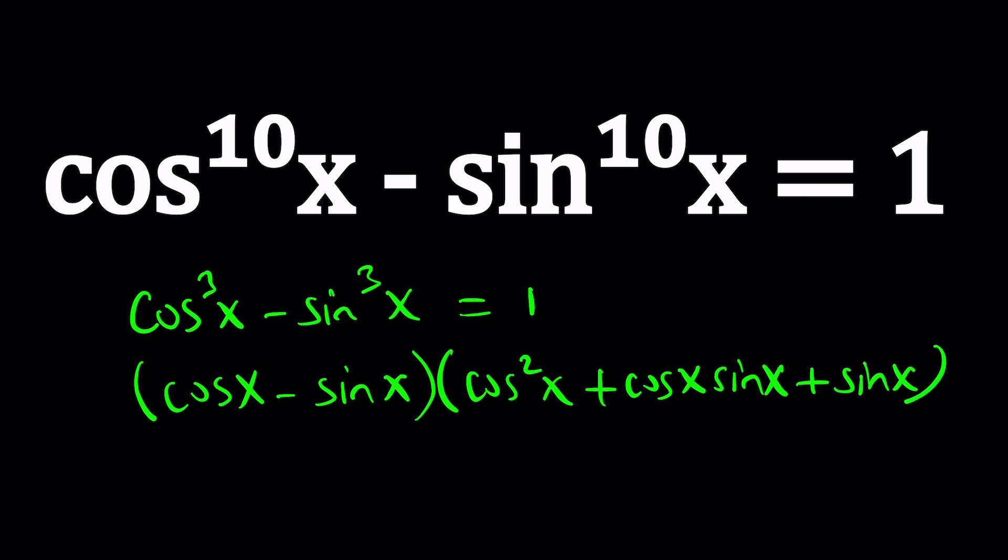When you factor this by difference of 2 cubes, a cube minus b cube, you're going to get something like this. Cosine squared plus sine squared x, right? Their sum is 1. So we get something like cosine x minus sine x.